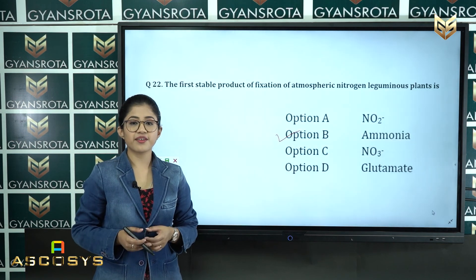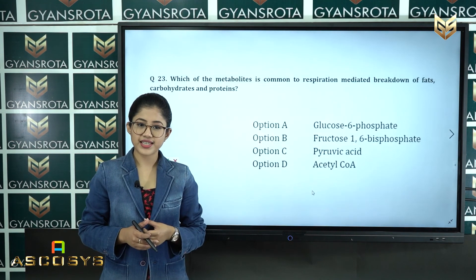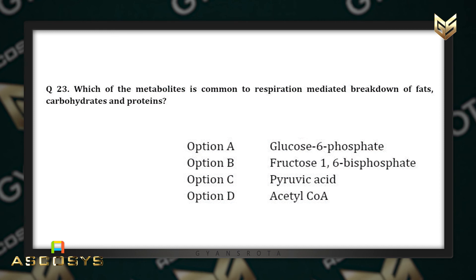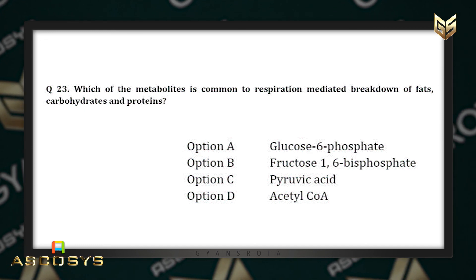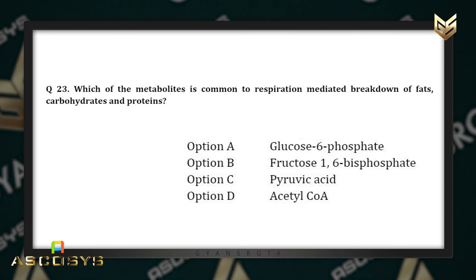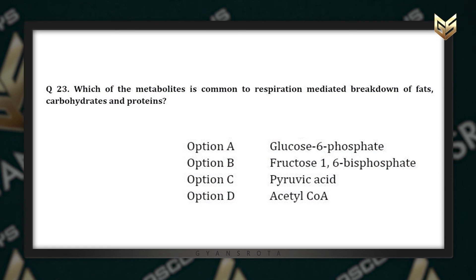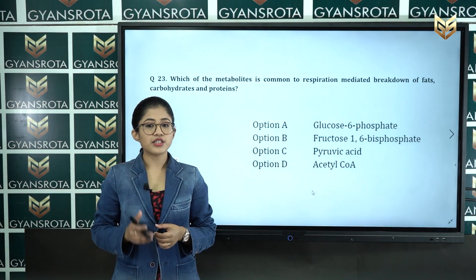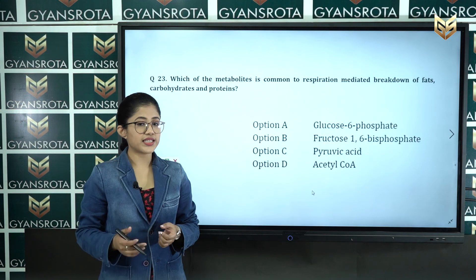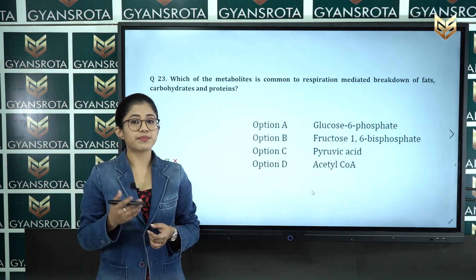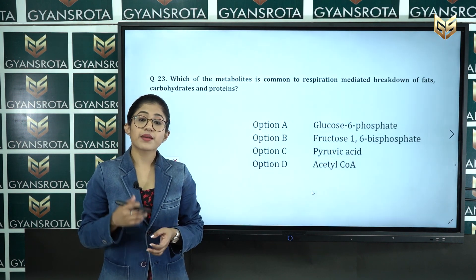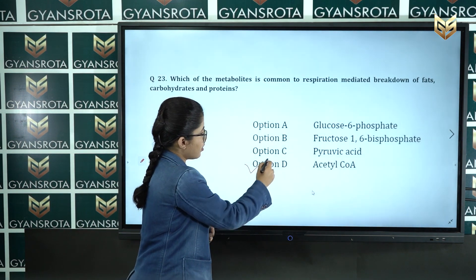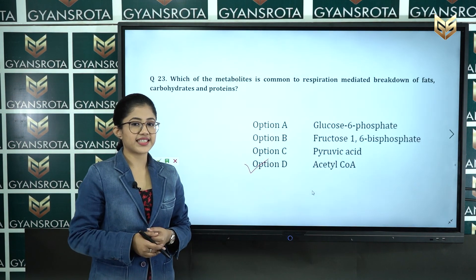Question number twenty-three: which metabolite is common to respiration-mediated breakdown of fats, carbohydrates and proteins? Option A: glucose-6-phosphate, option B: fructose-1,6-bisphosphate, option C: pyruvic acid, option D: acetyl coenzyme A. This is from class 11, chapter respiration in plants. The correct answer is option D — acetyl coenzyme A is the metabolite common to respiration-mediated breakdown of fats, carbohydrates and proteins.